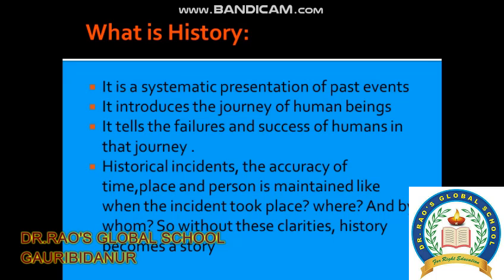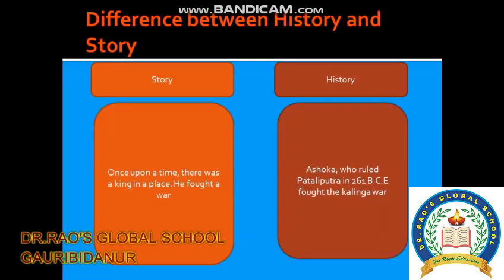Without these clarities, history becomes a story. The difference between history and story: in a story — 'once upon a time there was a king in a palace, he fought a war.' The same in history: Ashoka ruled Pataliputra in 261 BCE and fought the Kalinga war. In a story there is no time, no place, and no name, but history gives name, place, and time.